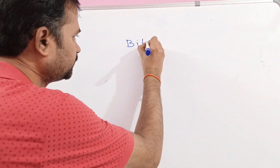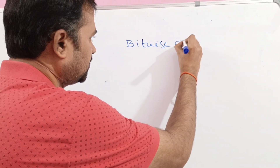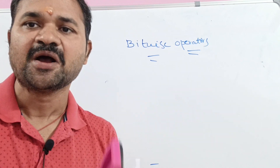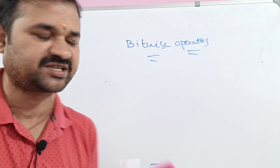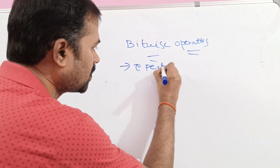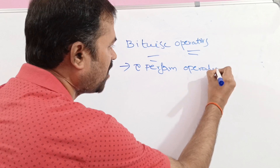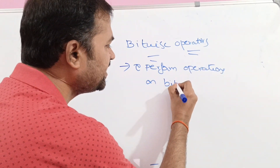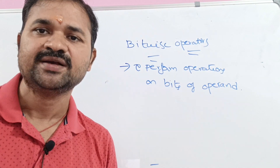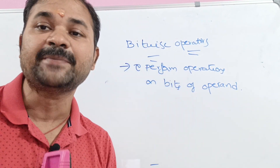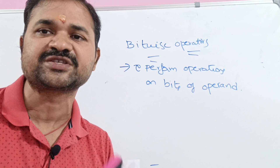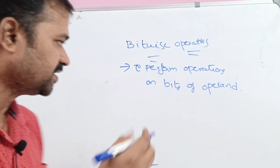Bitwise operators are mainly useful to perform operations on bits of the operand. Operand means a number, variable, or expression on which bit-level operations are performed. There are totally six bitwise operators.